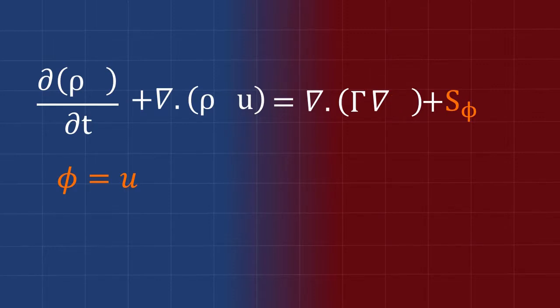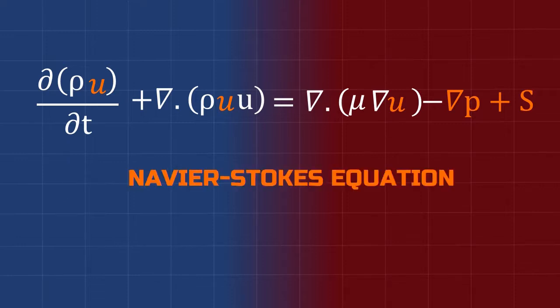And also, if you change the source terms with the pressure term and the source term, and the diffusion term with mu, that is the dynamic viscosity, then we get the Navier-Stokes equation. Similarly, we can also write the energy equation from the general transport equation by replacing Phi with i.